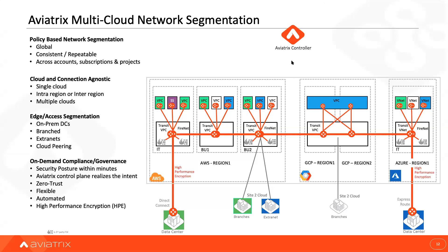Now I'm going to dive into multi-cloud network segmentation. When it comes to building your multi-cloud network architecture in the cloud, you have different types of workloads running — prod, dev, and test. You also need to make sure you're providing proper compliance and auditing for the workload. The native tools that cloud providers give you don't provide the capability to color or segment the traffic properly.